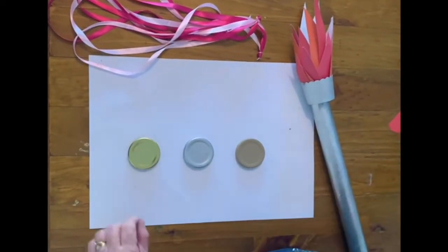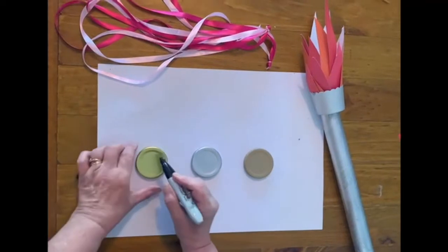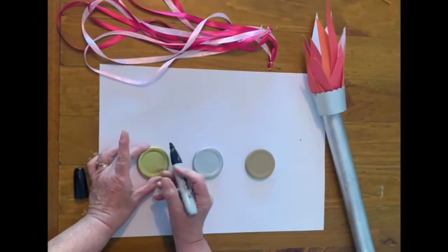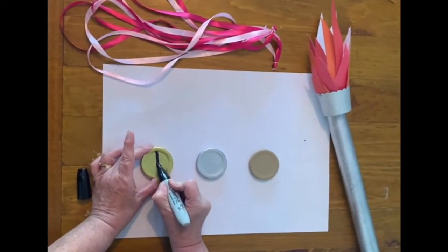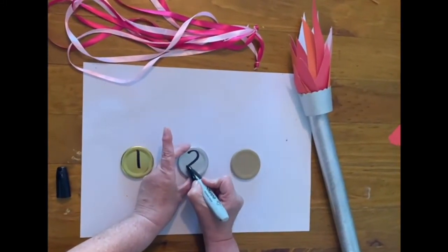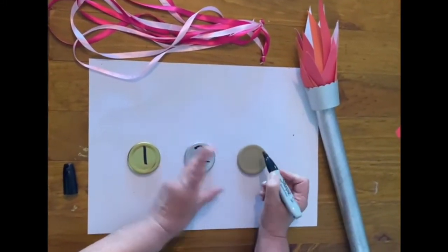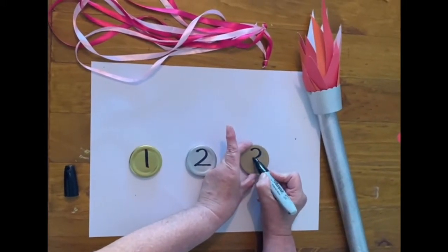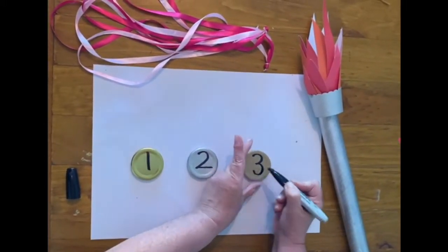Now for the medals we've got three. We've got gold and that's going to be for our first winner. Then we've got silver for our second place. And then third place we have bronze.